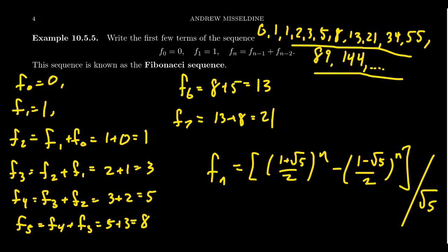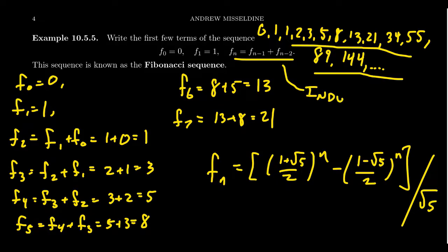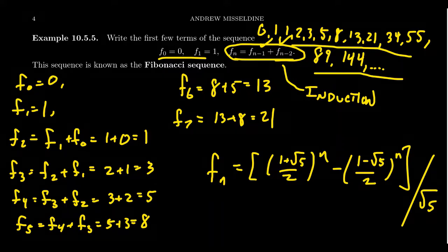How does one prove anything about a recursive sequence at all? If each term depends on its predecessors, how can we say anything about the general term without knowing the predecessors? We have to investigate what properties the predecessors have. This is actually where we connect back to what we've been discussing: proving things about recursive sequences typically comes down to induction. A recursive sequence has a similar structure to an induction proof — a base case, and a recursive step analogous to the inductive step.